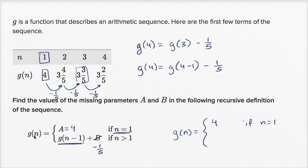If I'm trying to find the fourth term, if n is equal to four, I'm not going to use this first case because this has to be for n equals one. So if n equals four, I would use the second case. Then it would be g of four minus one, it would be g of three minus one-fifth.